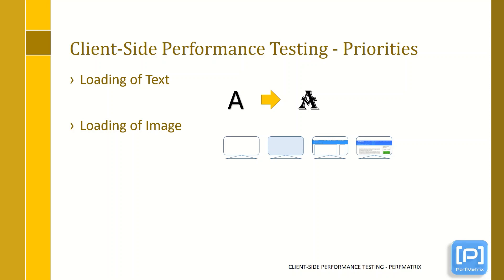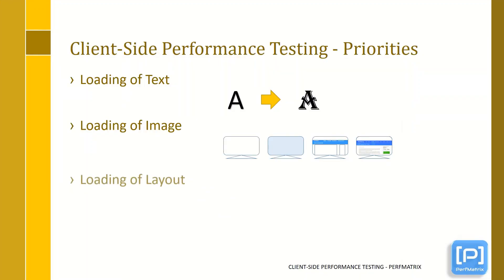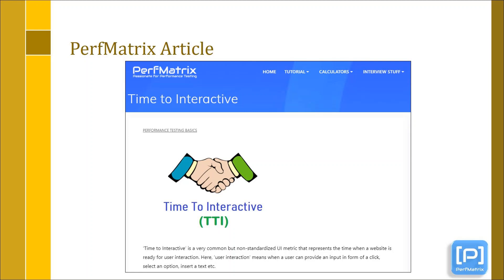To understand what the largest content is, please refer to the article related to LCP — the article link is given in the description. The third priority is loading of layout, meaning the visual framework of the page should load quickly with key text elements placed in the correct location. The last is user interaction, which is when the page is fully ready for user interaction including clicks, option selections, or text input. A detailed article on Time to Interactive (TTI) is also linked in the description.